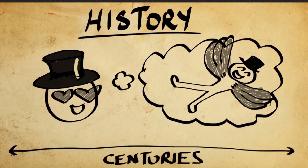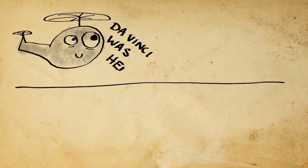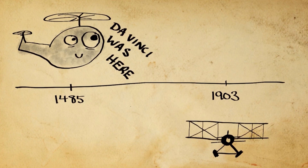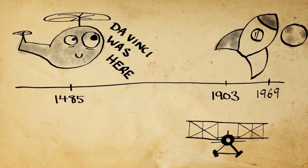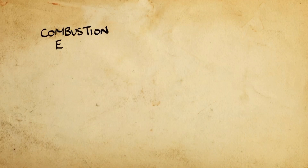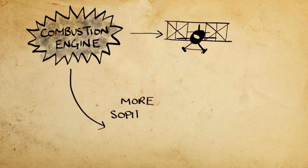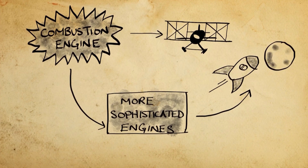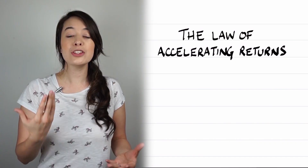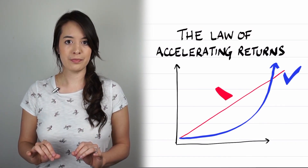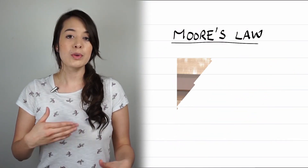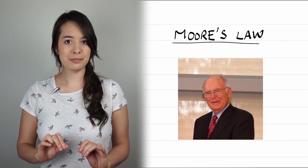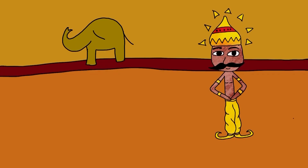Humans have been fascinated with flying for centuries. We found sketches by da Vinci of helicopter-type contraptions dating back to the 15th century, but it took 400 years for the Wright brothers to achieve the world's first aeroplane flight. Then it only took another 66 years to build a rocket to the moon. That's because breakthroughs in technology make way for new technology. The invention of the combustion engine gave way to the Wright brothers' plane, which led to more sophisticated engines, which eventually made the moon landing possible. This is called the law of accelerating returns, and it tells us that the growth of computing power is exponential, not linear. The most well-known example is probably Moore's law, which applies specifically to the number of transistors in an integrated circuit.